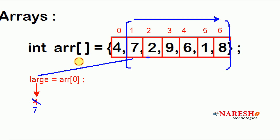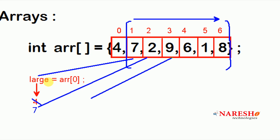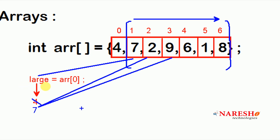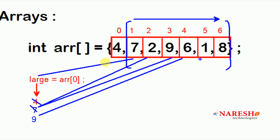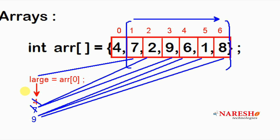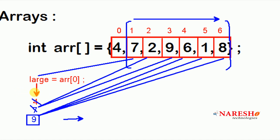Next, compare `large` with element at index 2, which is 2 — not bigger. Then compare with index element 9 — yes, we found a new largest element, so 9 is stored into `large`. Next it compares with 6 — no use; then 1 — no; then 8 — no. Finally, the variable `large` contains the largest element in the list.